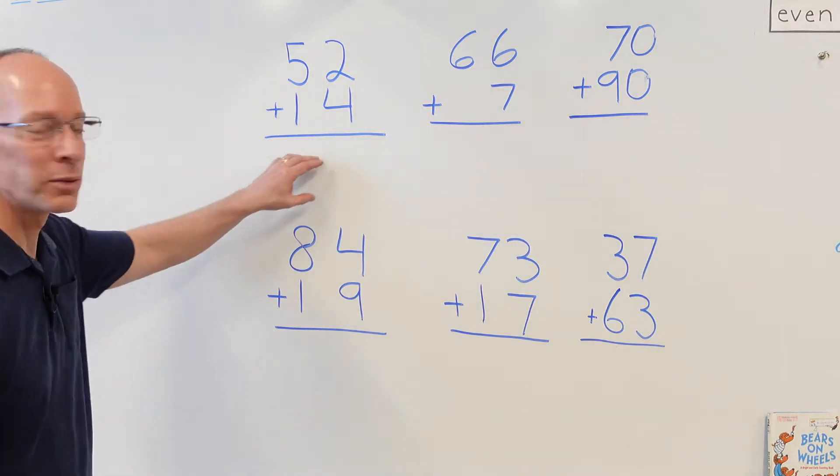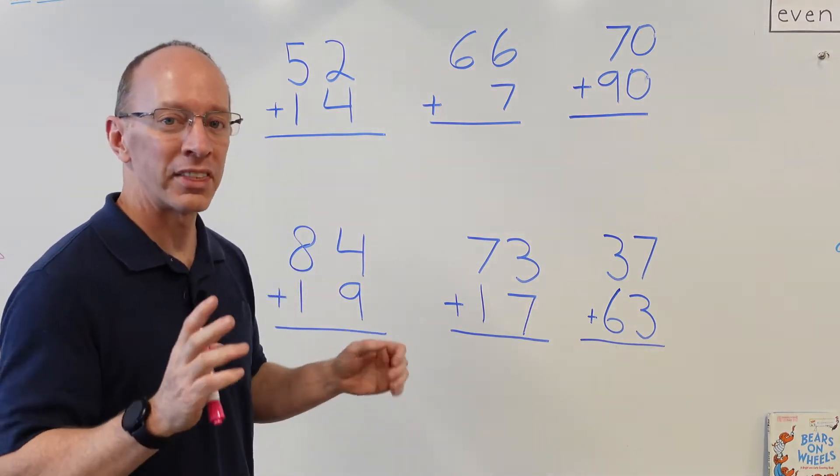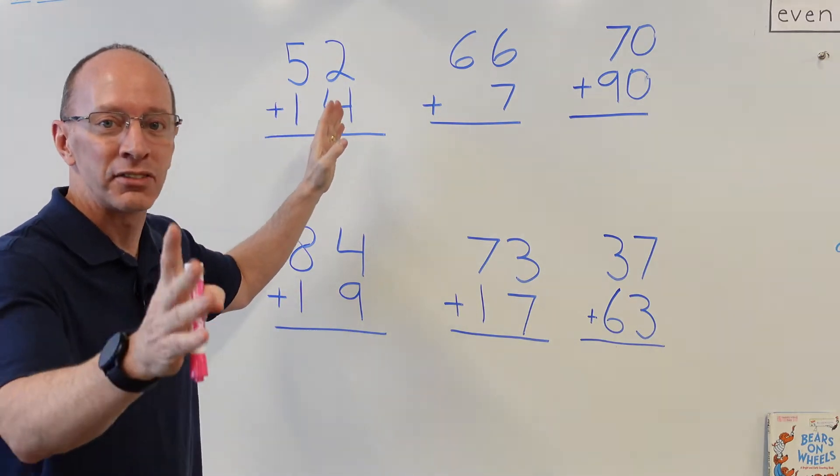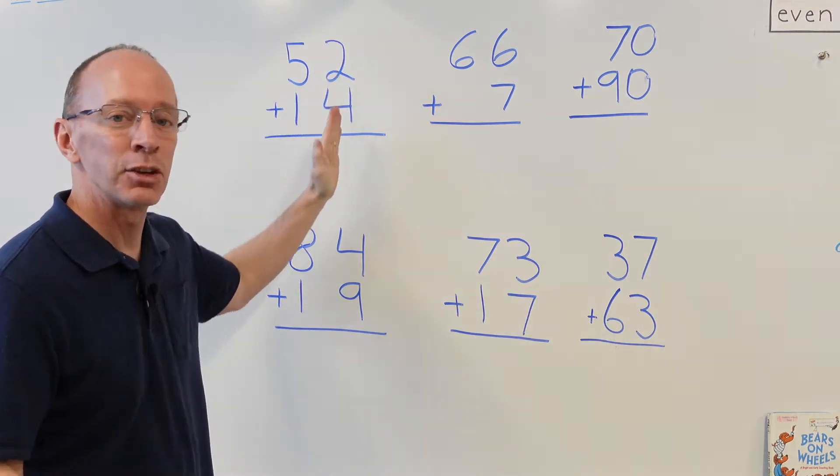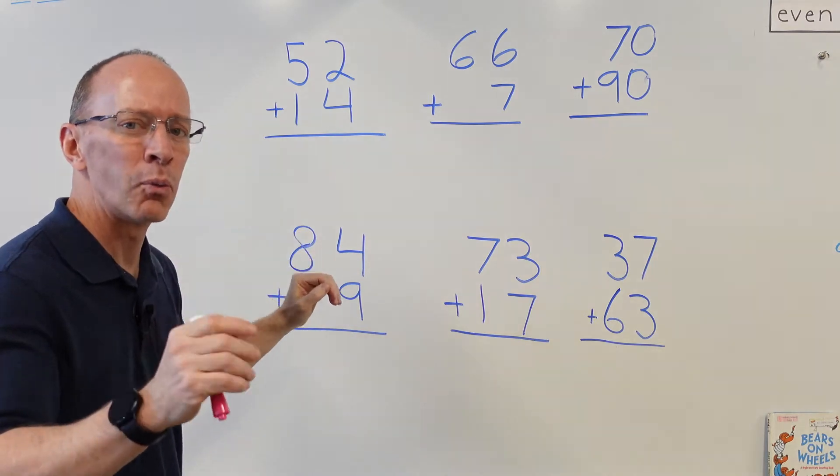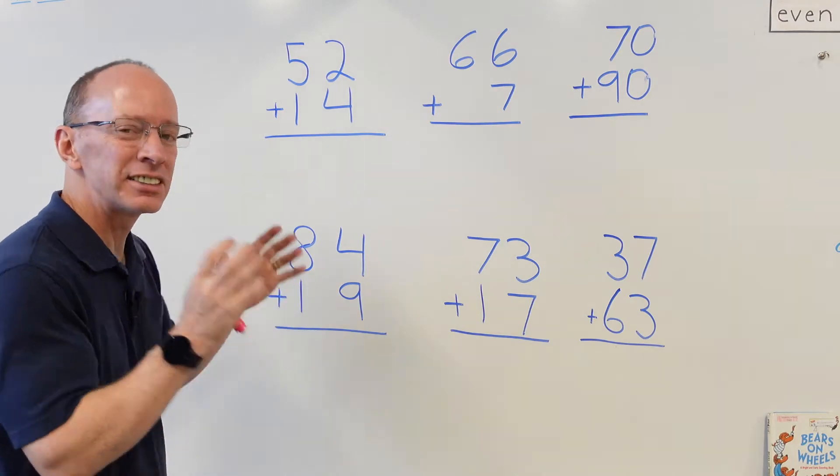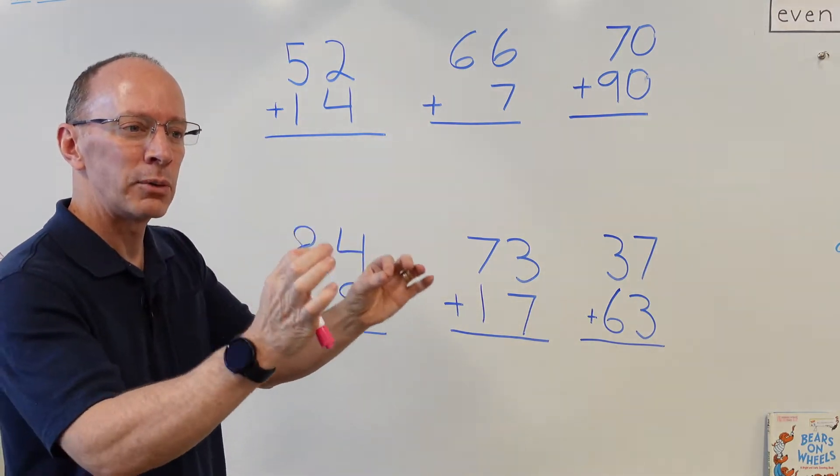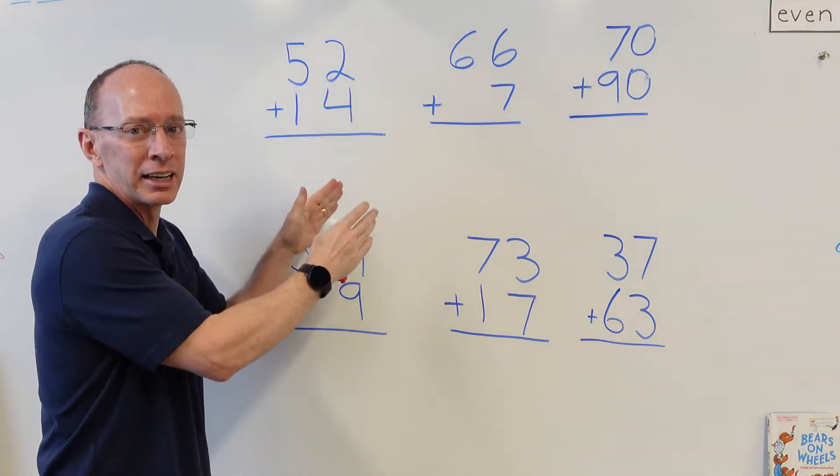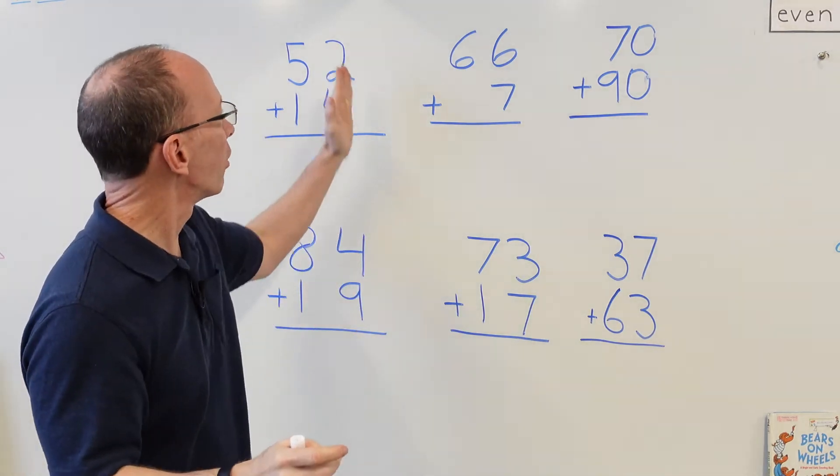All right, let's get started here. We're going to start with this problem right here, 52+14. Remember our rules: when we are working with addition we have to add the ones first. This is the ones column. This is the tens column. I'm going to show you something, a little bit why it's so important that we have to add the ones first, because when we work with mathematics and problems we just automatically want to go with this first number and start adding, but the result can change.